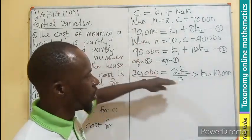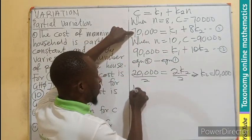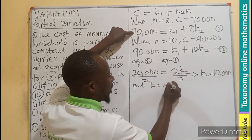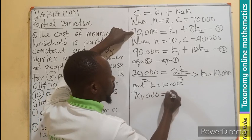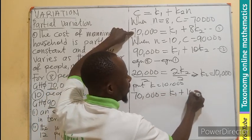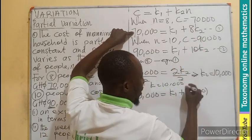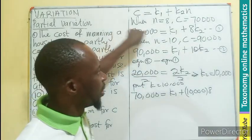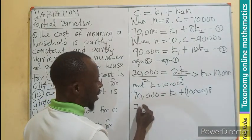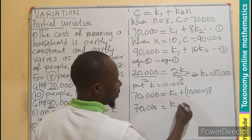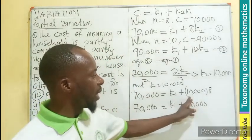It's a simultaneous equation, so we substitute back into one of the equations to get k1. Let's use equation one. If you put k2 equals 10,000, you're going to have 70,000 equals k1 plus 10,000 times 8. So 70,000 equals k1 plus 80,000.